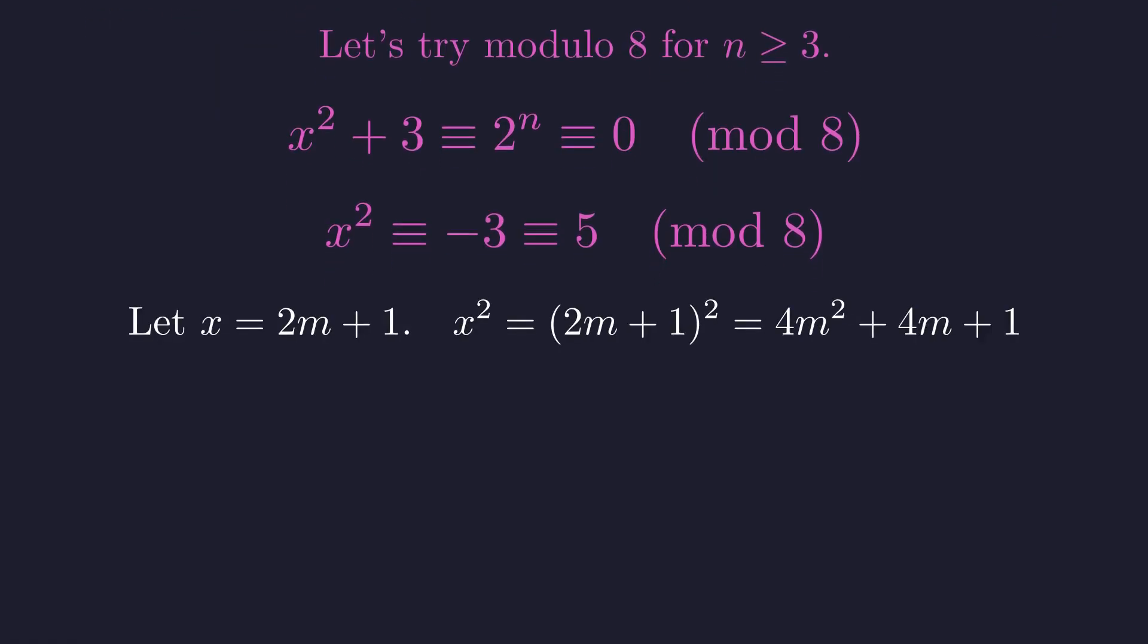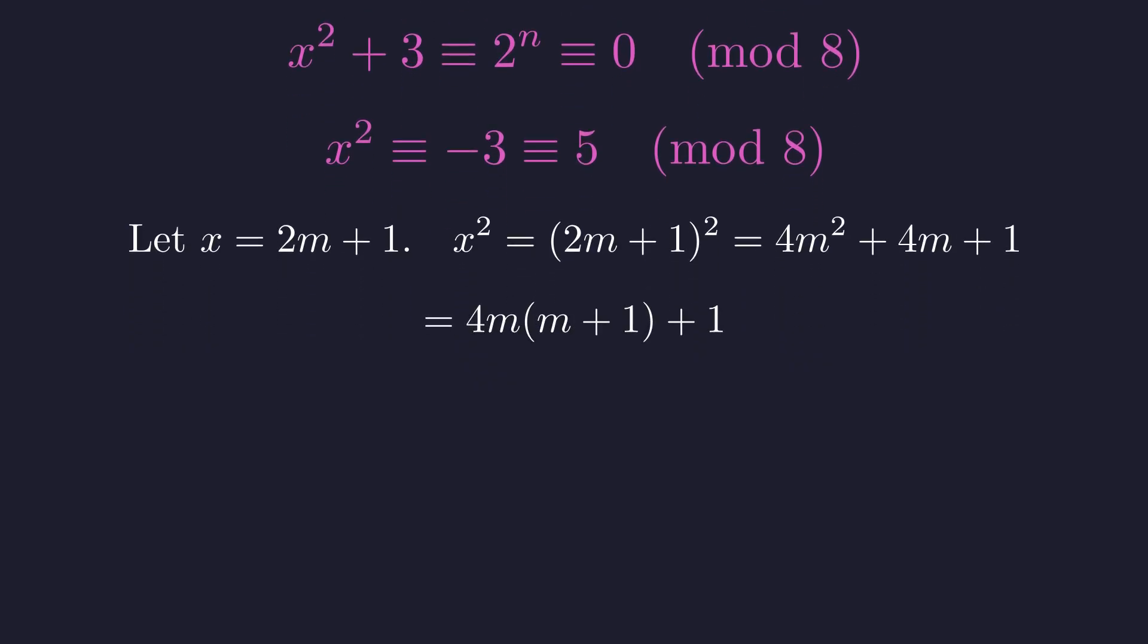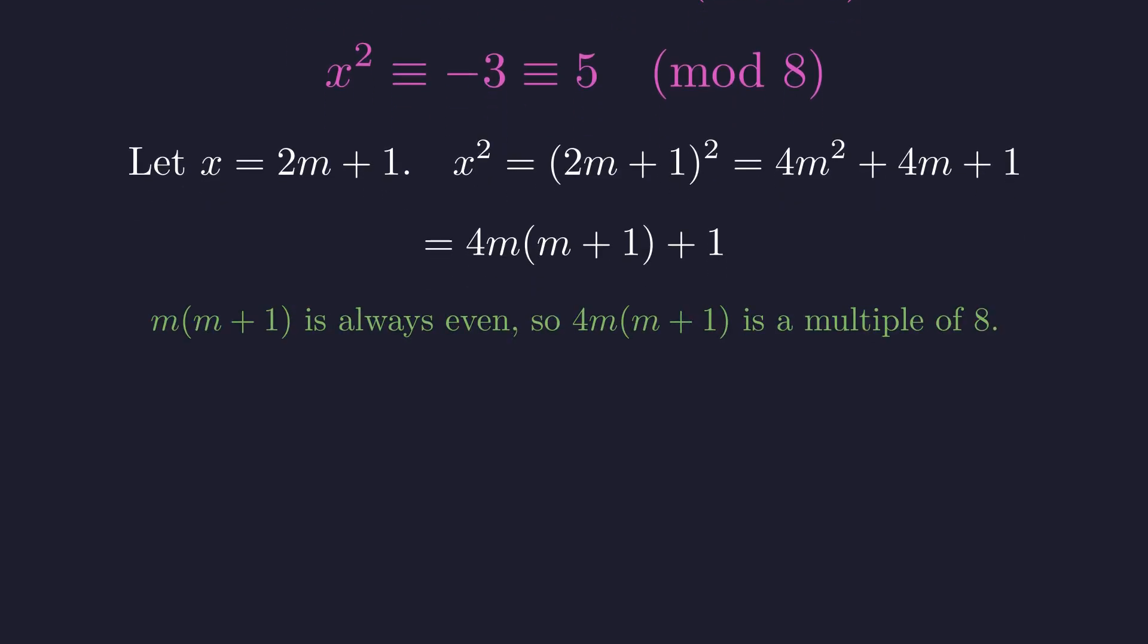An odd number can be written as 2m plus 1. Squaring this gives 4m squared plus 4m plus 1. Factoring out 4m gives us this expression. The term m times m plus 1 is a product of two consecutive integers, so it must be even.